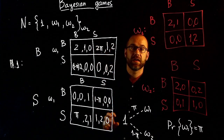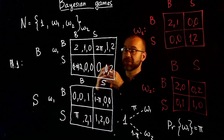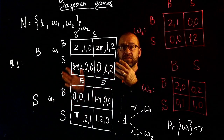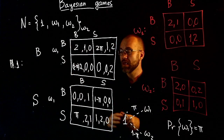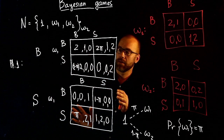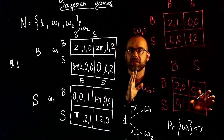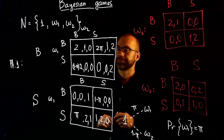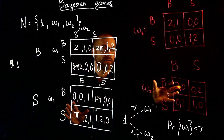Now this is a game in normal form with three players and no asymmetric information in the representation, so I can solve for a Nash equilibrium. Once I solve for a Nash equilibrium in this three-player game, I get what we call a Bayesian Nash equilibrium for the original game. Of course, when solving these games in practice, we won't go through the trouble of rewriting normal form games with fictitious players, but we'll keep this in mind behind the curtain.